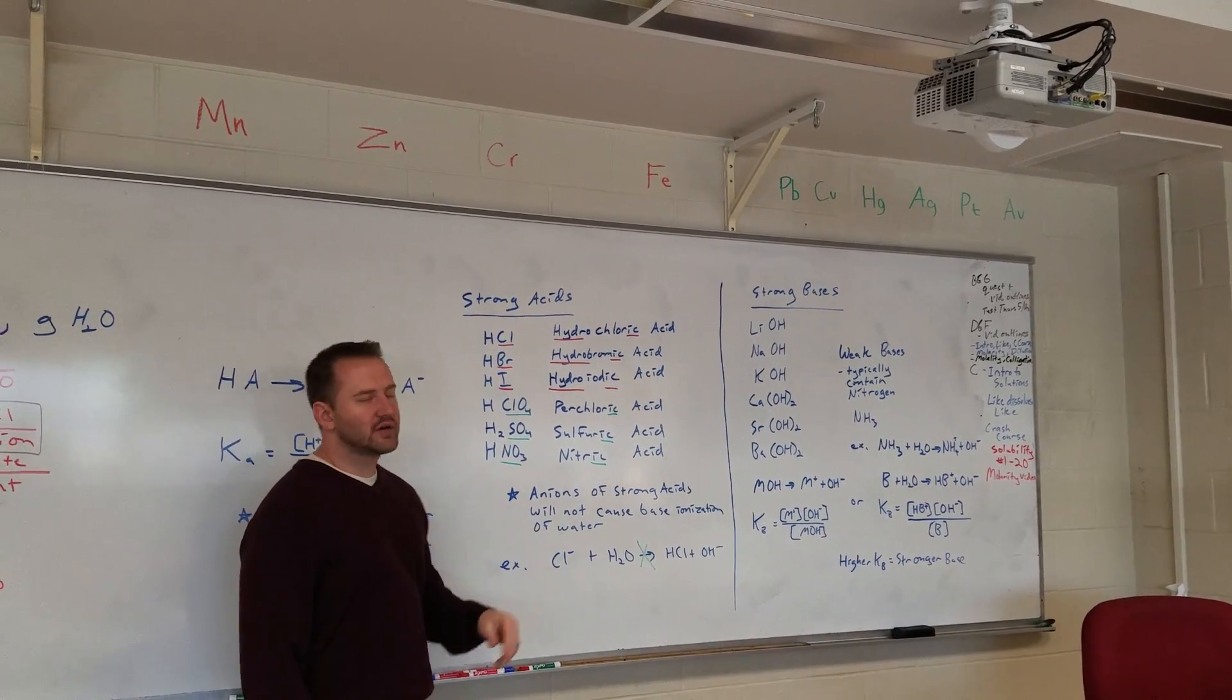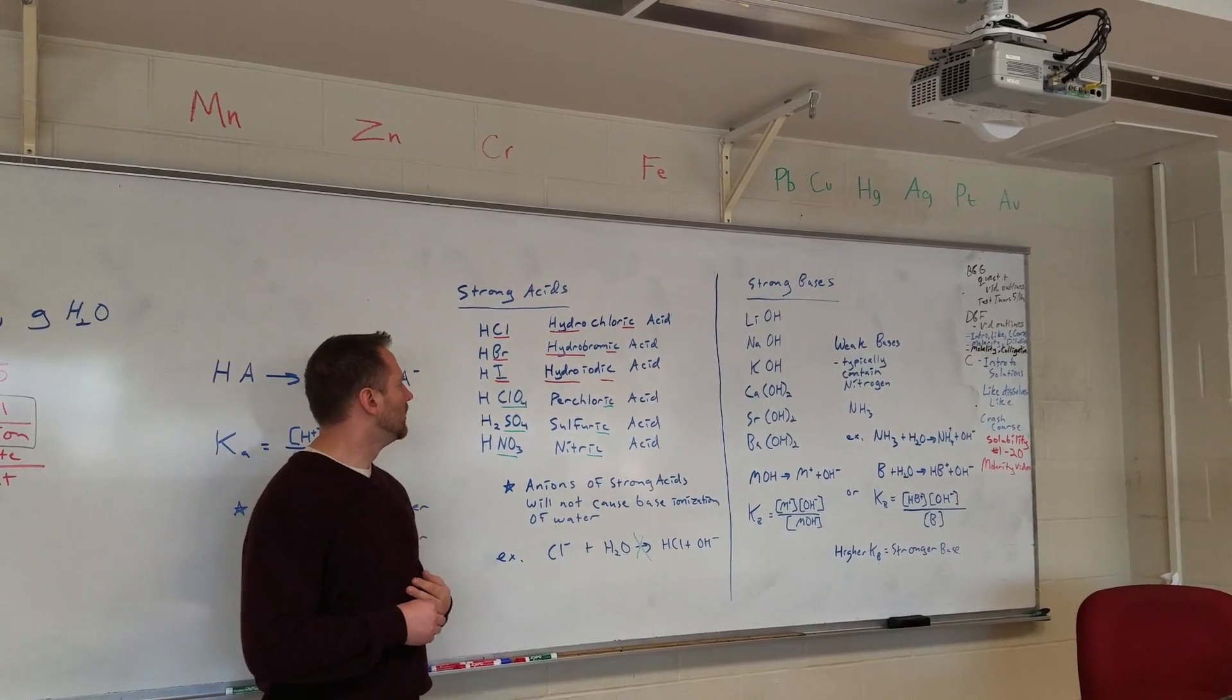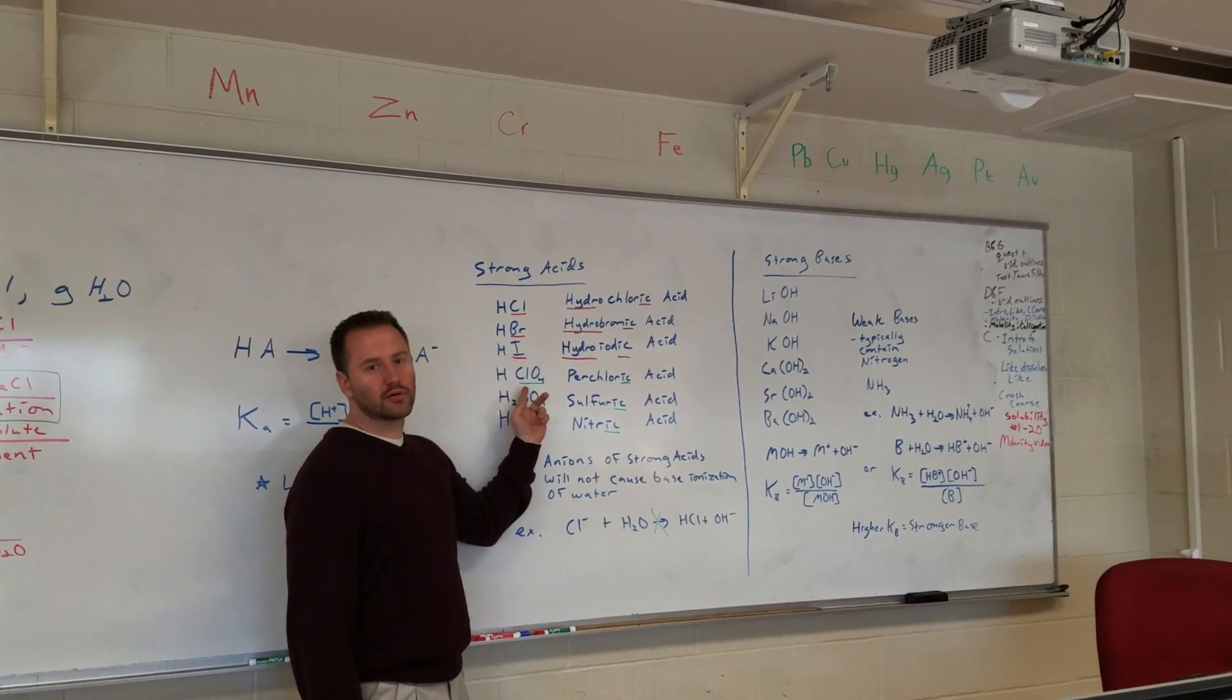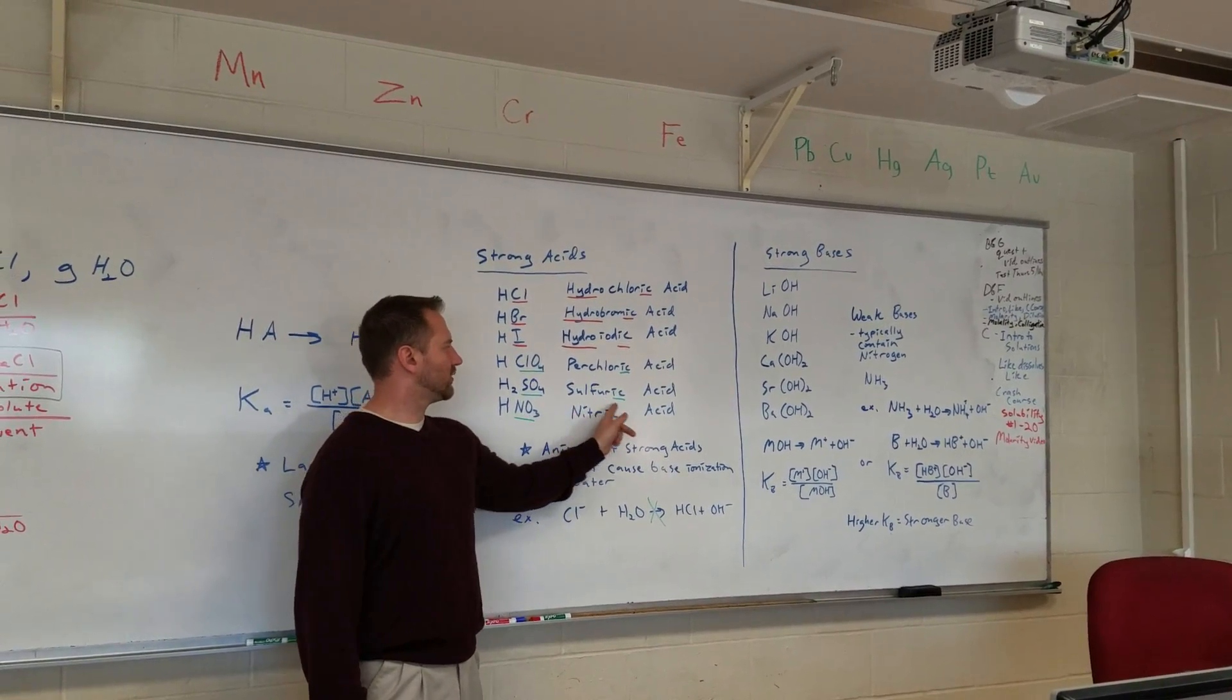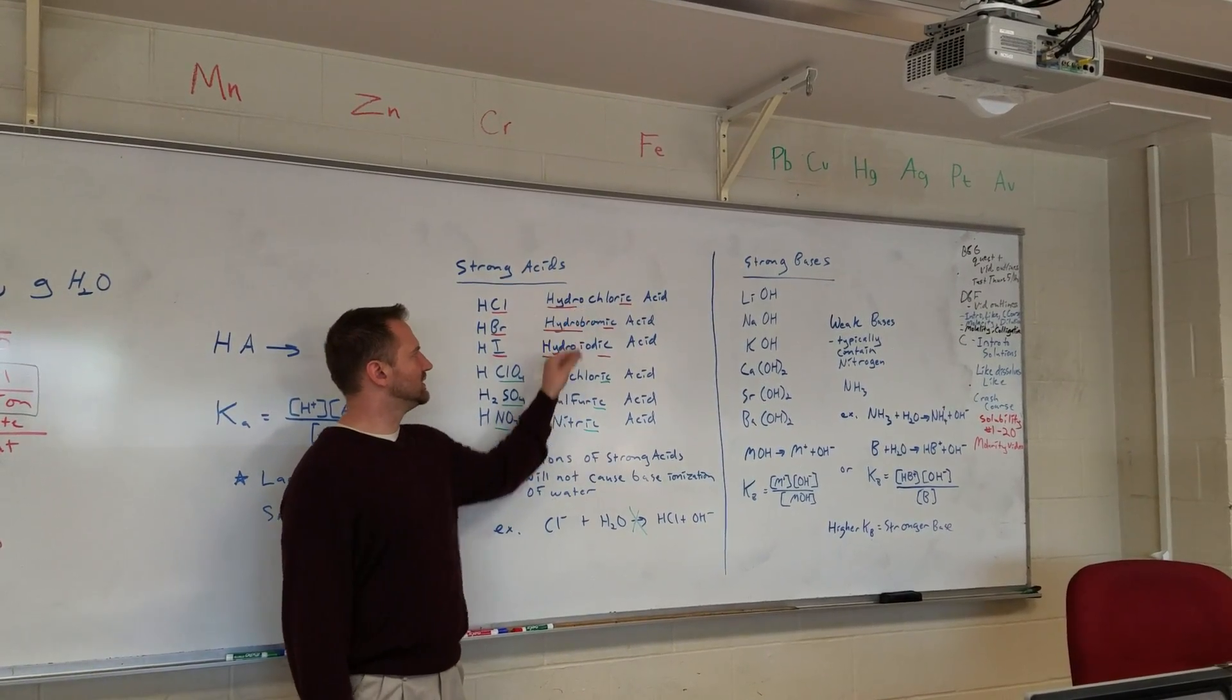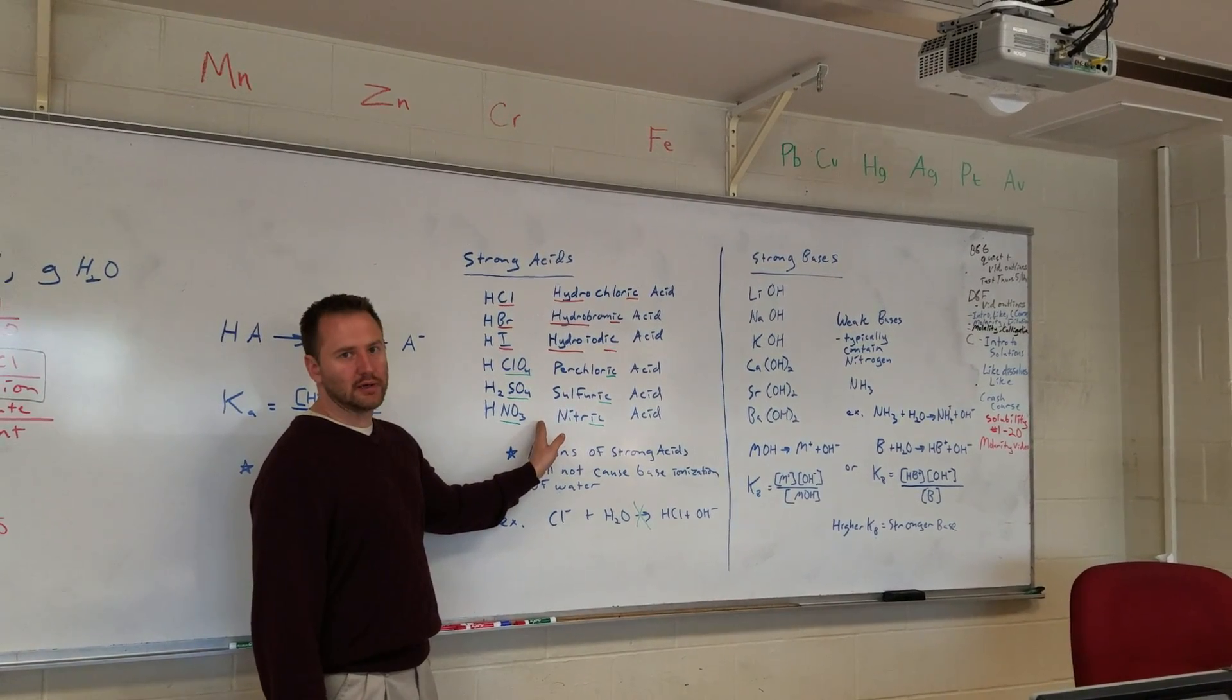However, if you have a strong acid, or any acid, where the anion is a polyatomic ion, you don't have to include the hydro. You just say, this is the perchlorate ion, so it's perchloric acid. Sulfate ion, sulfuric acid. Nitrate ion, nitric acid. So you can see the difference when you have a monatomic anion and a polyatomic anion.